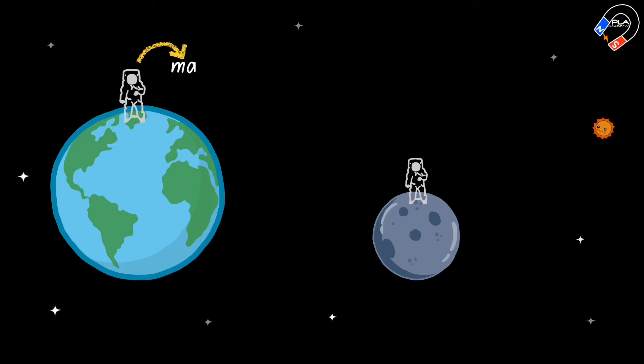When an astronaut is on Earth, their mass is 75 kilograms. Therefore, their weight is 75 times 9.8, which equals 735 newtons. This is because the gravitational field strength on Earth is 9.8 newtons per kilogram.